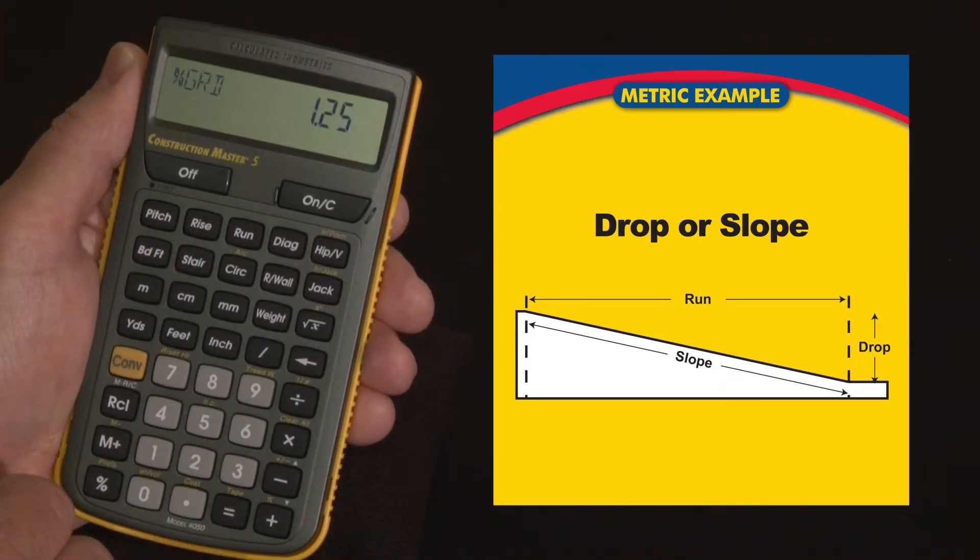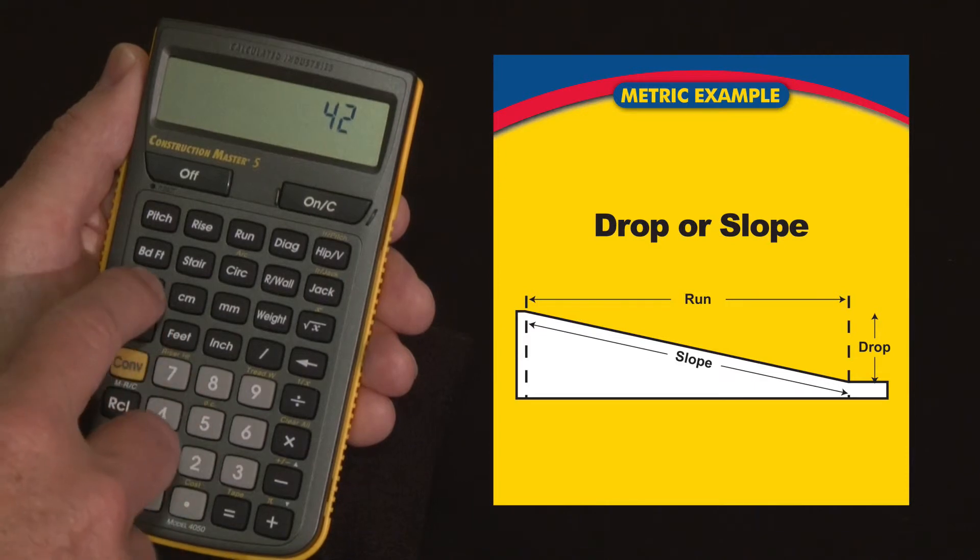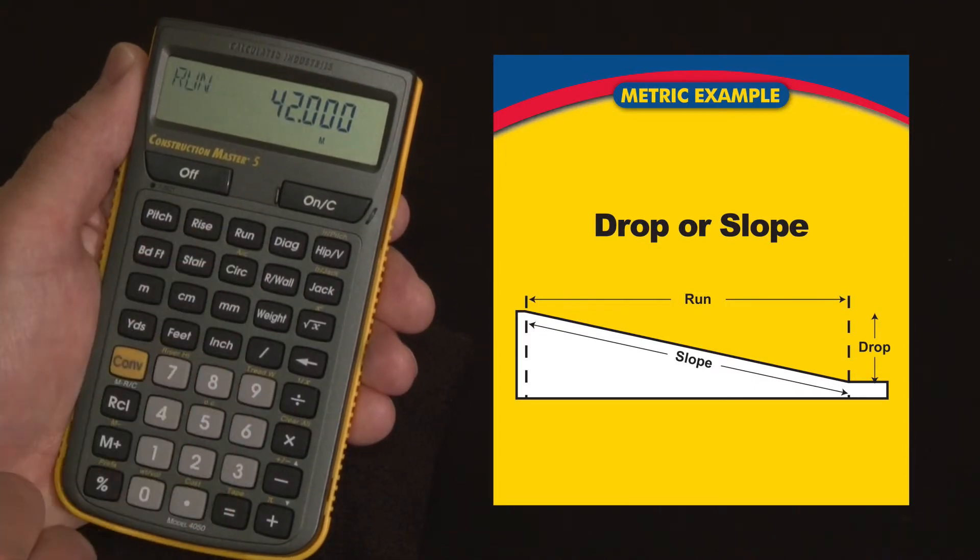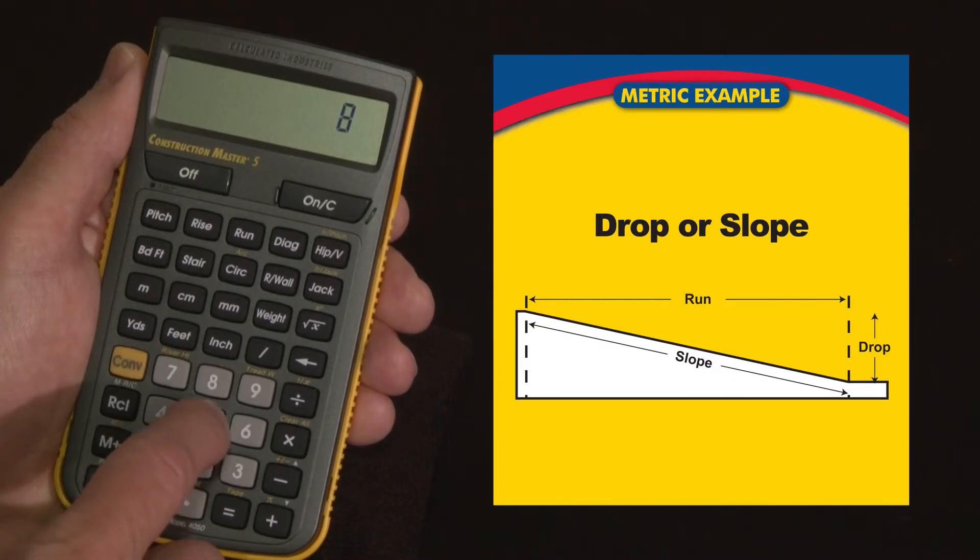Another situation you might use this feature is if you have a piece of land, a lot that it slopes and you're wondering will it drain, say for instance it's 42 meters long, 42 meters, and we'll enter that as the run, and you've measured it and it's about 857 millimeters lower at the far end than this end.